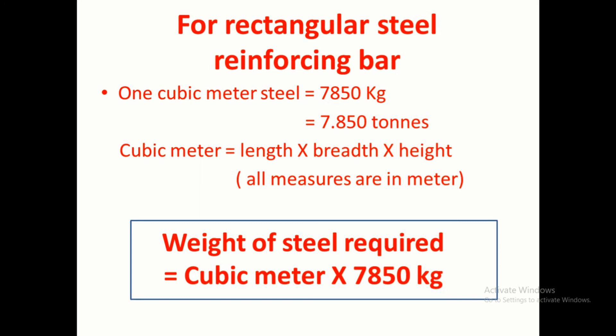Now we will calculate the volume of that rectangular rebar or square rebar by multiplying length into breadth into height. One most important thing I need to clear is that all the dimensions should be in meter. So whatever the volume we get in cubic meter, we multiply by 7850 kg, so that we will get the weight of the steel required.